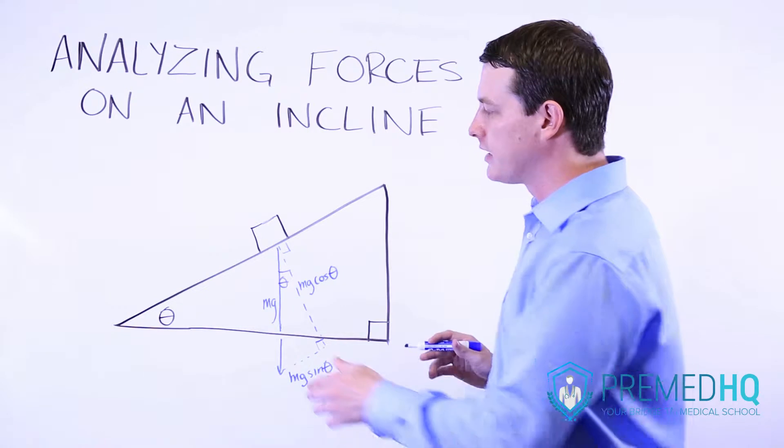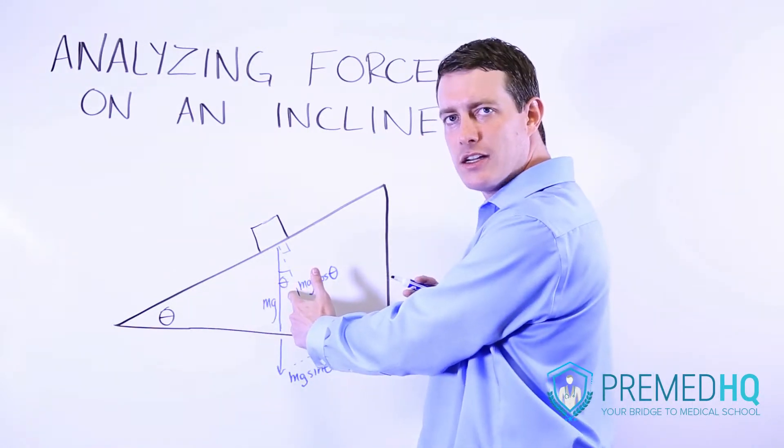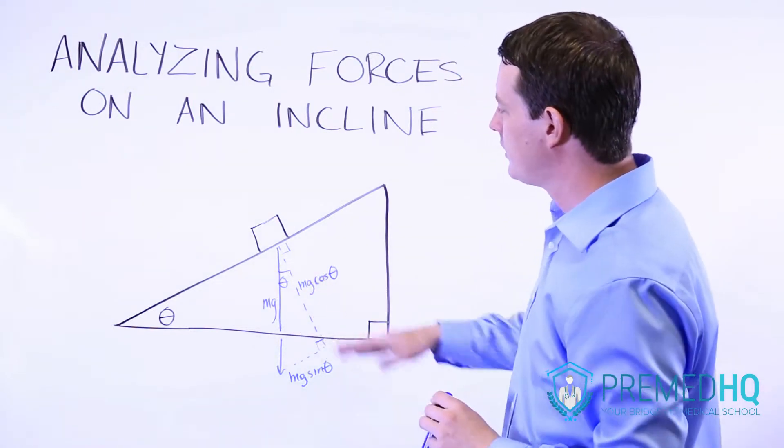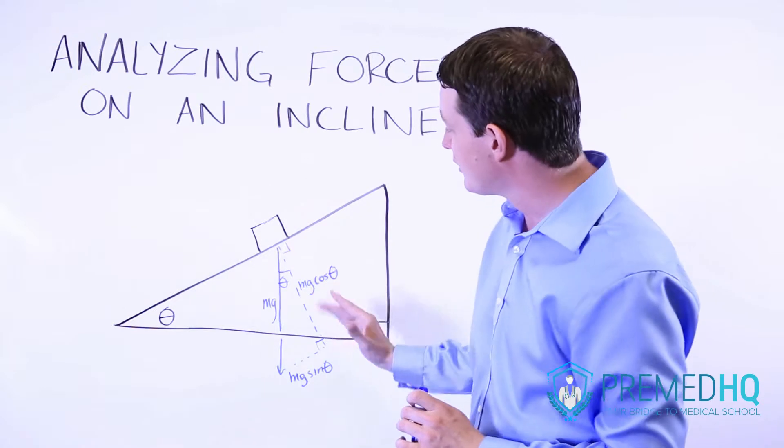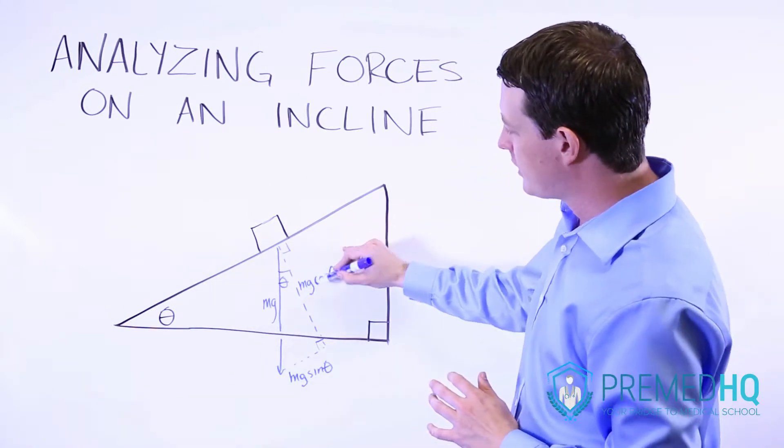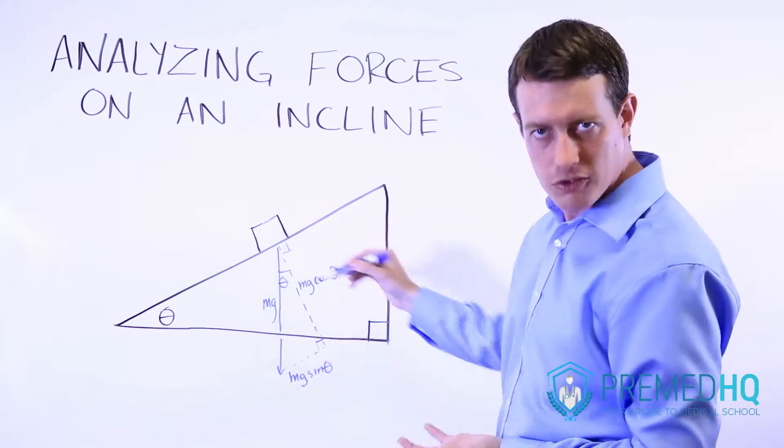The interesting thing is that this angle theta will be the exact same as this angle theta here. So now we can calculate the amount of gravity that is felt in this perpendicular direction as mg times cosine theta, because the cosine is the adjacent over the hypotenuse.